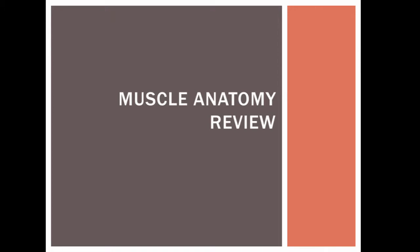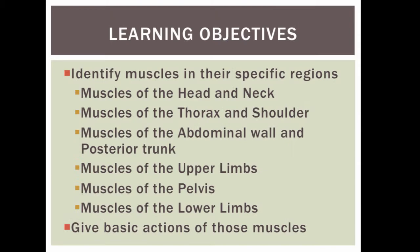Hello, my name is Jo Schmidt and today we'll be going over muscle anatomy. Your learning objectives for today are to identify muscles in their specific regions: the head and the neck, the thorax and shoulder, the abdominal wall and posterior trunk, muscles of the upper limbs, muscles of the pelvis, and muscles of the lower limbs. We'll also be giving some basic actions of those muscles.